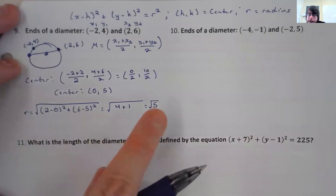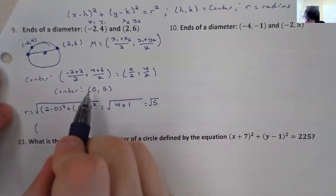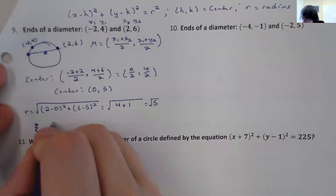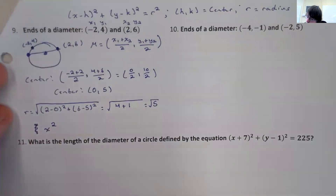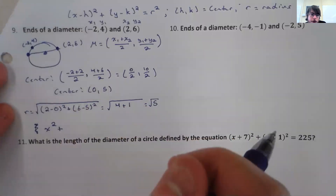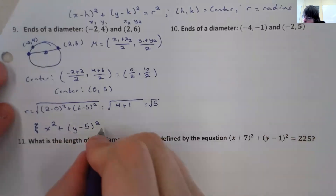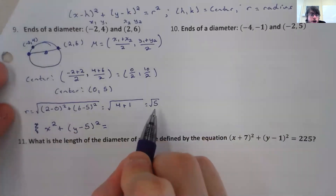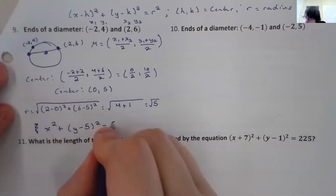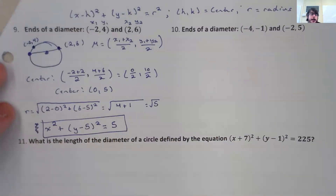Now we have our center and our radius, so we just need to plug those into the equation. x minus h: since our x-coordinate of the center is 0, x minus 0 just gives us x squared. Plus y minus k — the k here is positive 5, so in the equation it'll have the opposite sign, giving us y minus 5 squared. Equals r squared: squaring the square root of 5, the square root and square cancel, leaving just 5. So your equation is x squared plus y minus 5 squared equals 5.